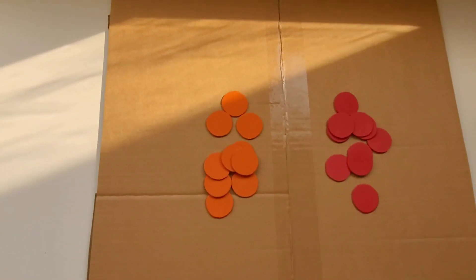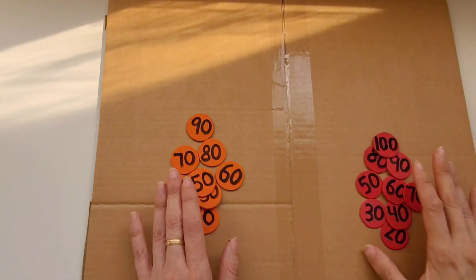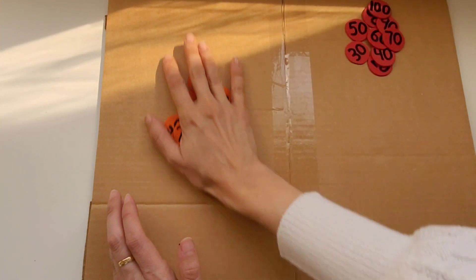I'm going to write the numbers from 10 to 90 on the orange and from 20 to 100 on the red.